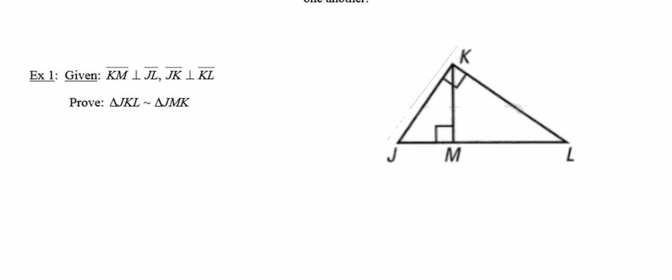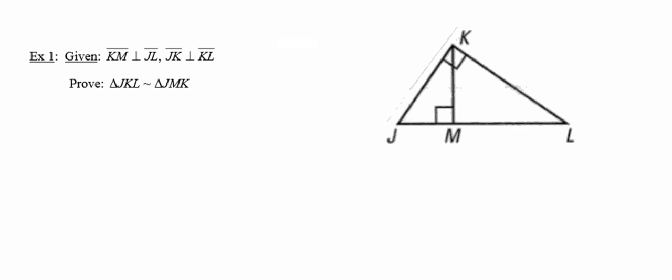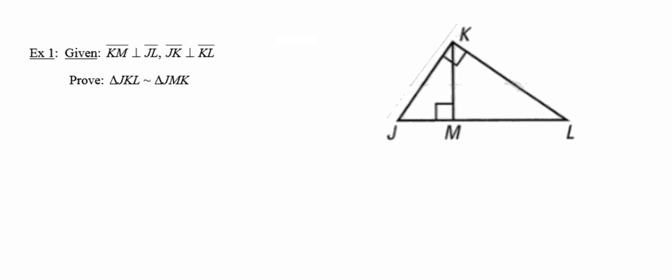In number one we're given that segments KM and JL are perpendicular and they've already put a right angle there for us. And segment JK is perpendicular to segment KL. Oh, and apparently I marked the first one incorrectly. So there we go. Thankfully they've marked both of those for us here in the diagram.